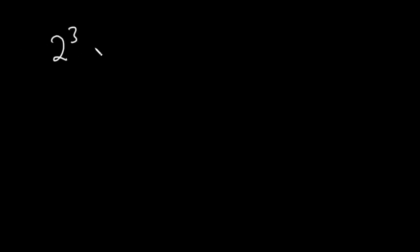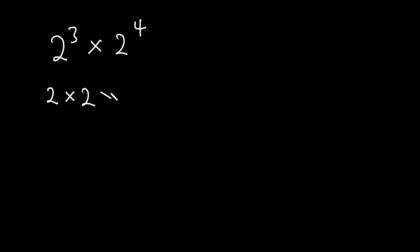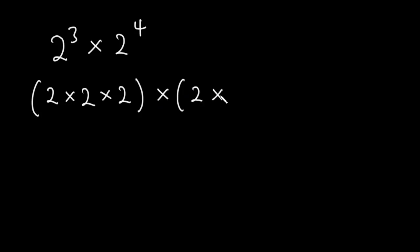What is 2 exponent 3 times 2 exponent 4? 2 exponent 3 means that we want to multiply 2 three times. So it's going to be 2 times 2 times 2, times 2 exponent 4, which is 2 times 2 times 2 times 2.